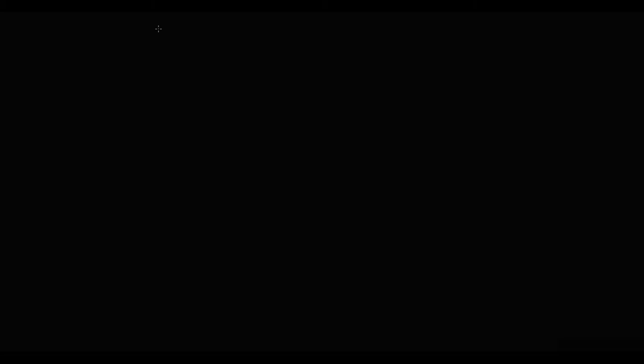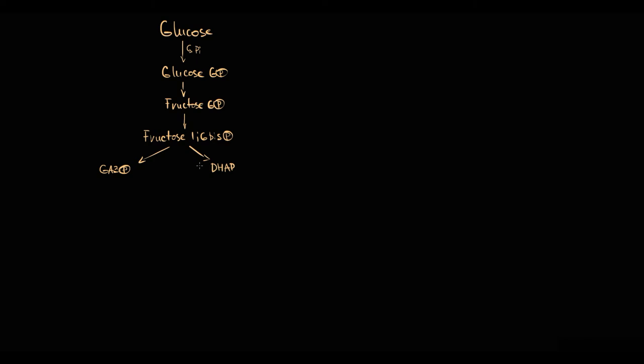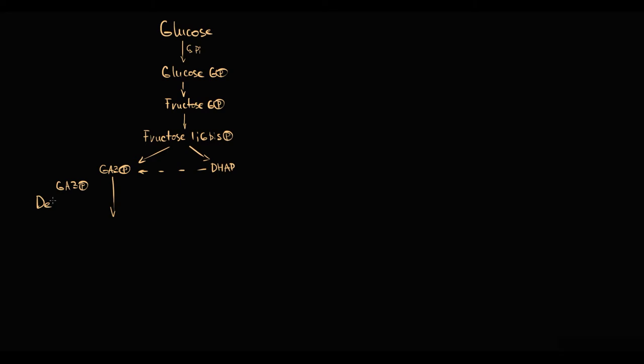So why does a low amount of oxygen result in formation of lactate? Once skeletal muscles uptake glucose from the blood, initially glucose is phosphorylated to glucose 6-phosphate, then converted into fructose 6-phosphate, then phosphorylation occurs that results in production of fructose 1,6-bisphosphate, and then fructose 1,6-bisphosphate is cleaved into glyceraldehyde 3-phosphate and dihydroxyacetone phosphate. Dihydroxyacetone phosphate is then converted into glyceraldehyde 3-phosphate. The crucial moment here is that glyceraldehyde 3-phosphate is oxidized by glyceraldehyde 3-phosphate dehydrogenase, which uses NAD as a cofactor, to 1,3-bisphosphoglycerate.